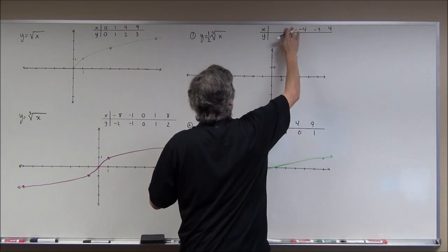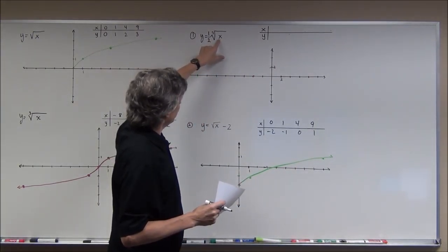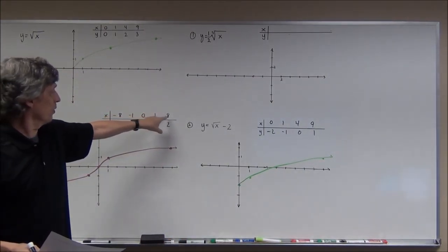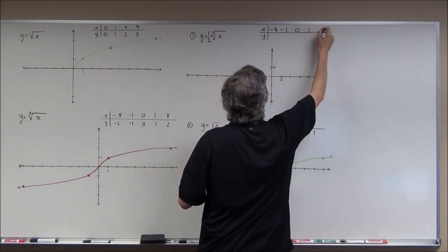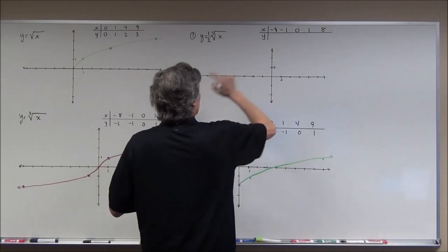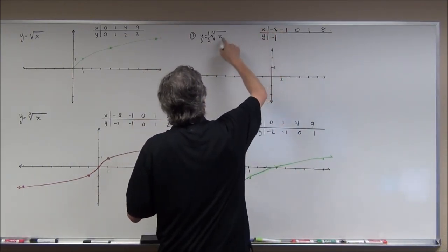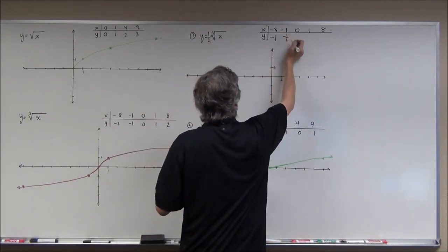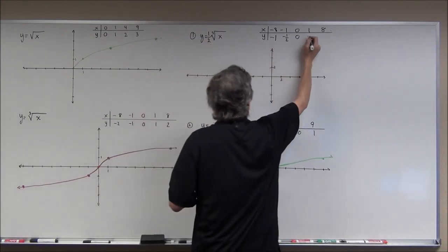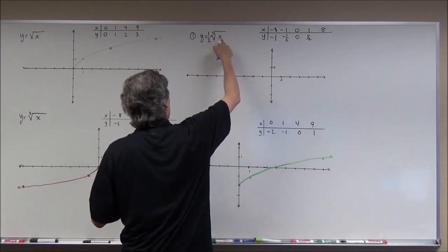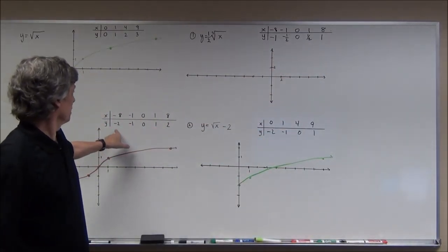Plugging each in: cube root of negative 8 is negative 2 times one half is negative 1; cube root of negative 1 is negative 1 times one half is negative one half; cube root of 0 is 0; cube root of 1 is 1 times one half is one half; cube root of 8 is 2 times one half is 1. Notice the y-values are all half of the parent function's y-values because of the one half coefficient.